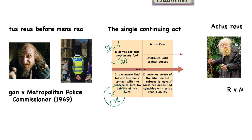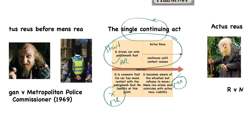The defendant becomes aware of the situation but refuses to move — mens rea arises at that point. What the court says is that in this instance the actus reus continues until the contact ceases. They treat the actus reus as a single continuing act — that's the phrase to remember: a single continuing act. So Fagan tells us there is a single continuing act. Note also that driving the car and refusing to move it is a positive act.